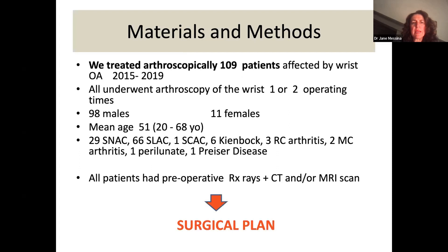We conducted a study treating arthroscopically 109 patients affected by wrist osteoarthritis, all undergoing arthroscopy in one or two operating sessions. 98 were males and 11 females, mean age 51. Most had SNAC or SLAC wrist, but also SCAC, Kienbock disease, radiocarpal arthritis, mid-carpal arthritis, perilunate, and Preiser disease. All patients had a preoperative protocol of X-ray, CT scan, or MRI scan, which was used to create the initial surgical plan. Then arthroscopy was performed to finalize the definitive surgical plan.